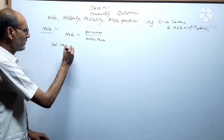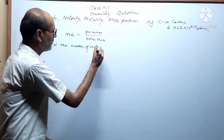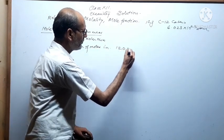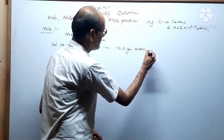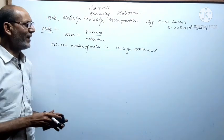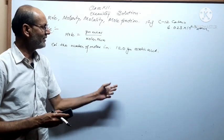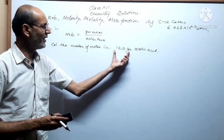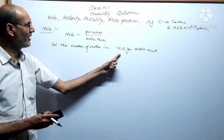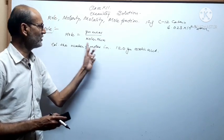Suppose the question is: calculate the number of moles in 120 gram acetic acid. First we find the molecular mass (molar mass) of acetic acid, and second, 120 gram is the gram mass. We put the value of gram mass and molar mass of acetic acid into the formula.